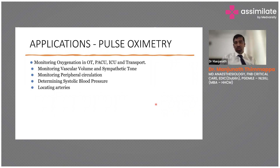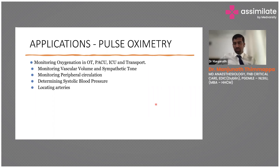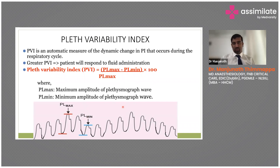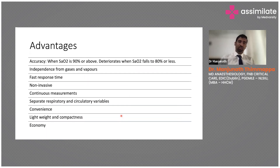The pulse oximeter can tell us whether a patient is fluid responsive or not, and helps in monitoring peripheral circulation. For example, after vascular procedures such as femoral or aortic bypass surgery, you can place the pulse oximeter to check for arterial supply compromise. The plethysmographic variability index — calculated from the maximum minus minimum, divided by the maximum — helps indicate whether the patient requires fluid administration.